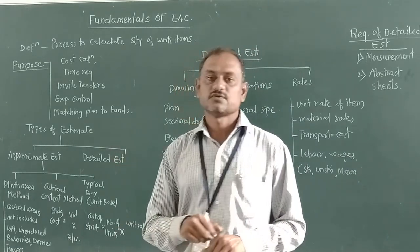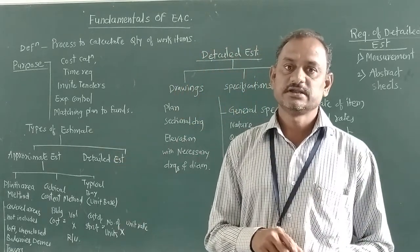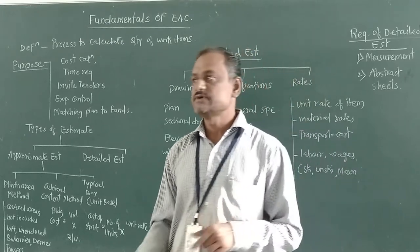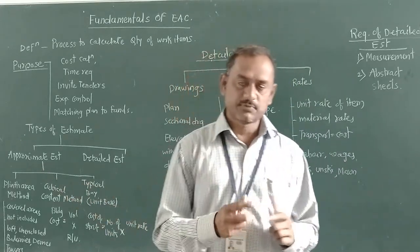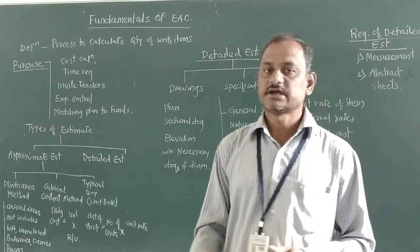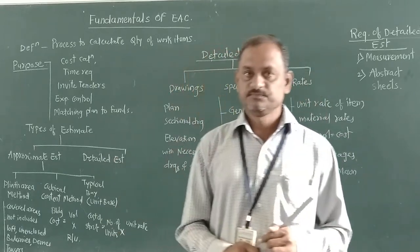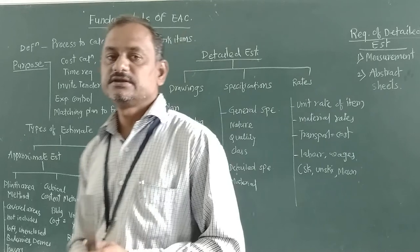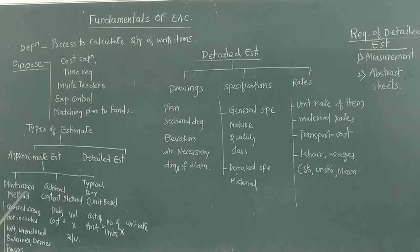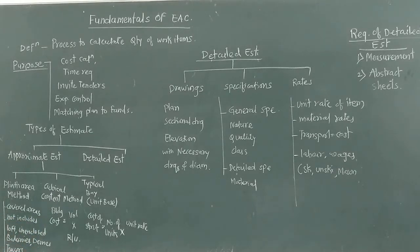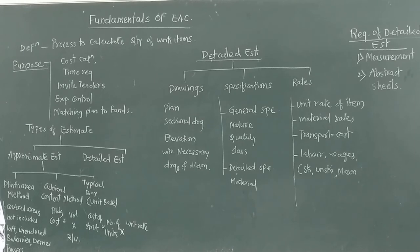The next point is the types of estimate. Basically, the estimate is divided into two types: first one is approximate estimate and second one is detailed estimate. Approximate estimate is again divided into three parts: plinth area method, cubical content method, and typical bay method. These are the three methods we adopt to calculate the approximate estimate.